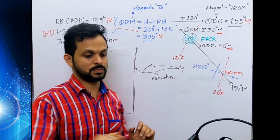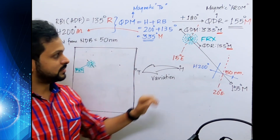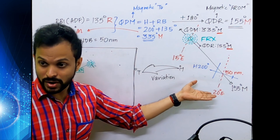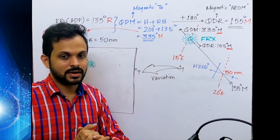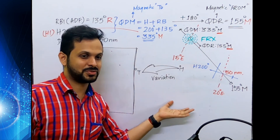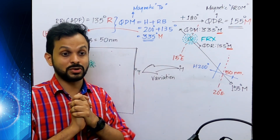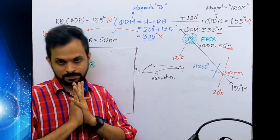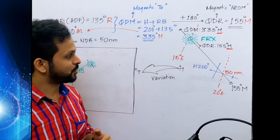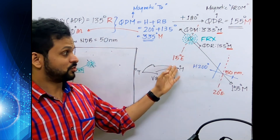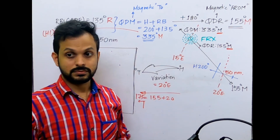We have done numerous questions based on this. Think about which variation you would use - 15 degrees east at the NDB or 20 degrees east at the aircraft - and why. I'll give you a couple of minutes to think about it. We have discussed this with VOR as well. Think it over: which variation would you prefer to use, and where do we take that from?